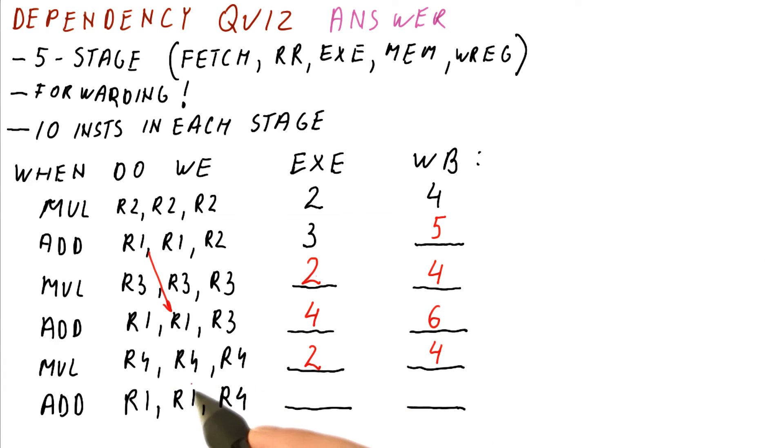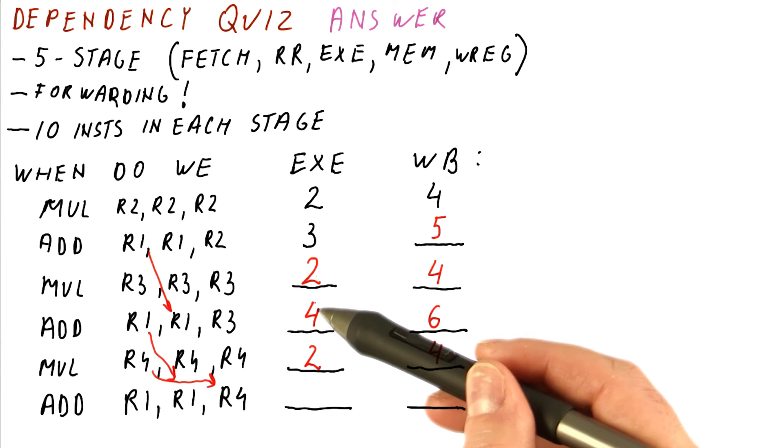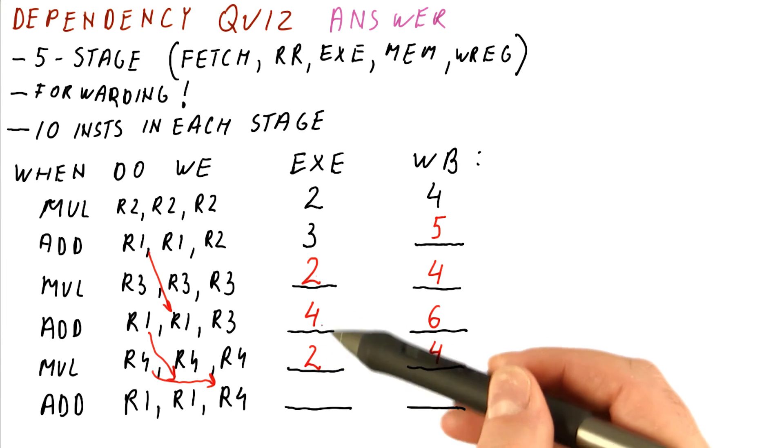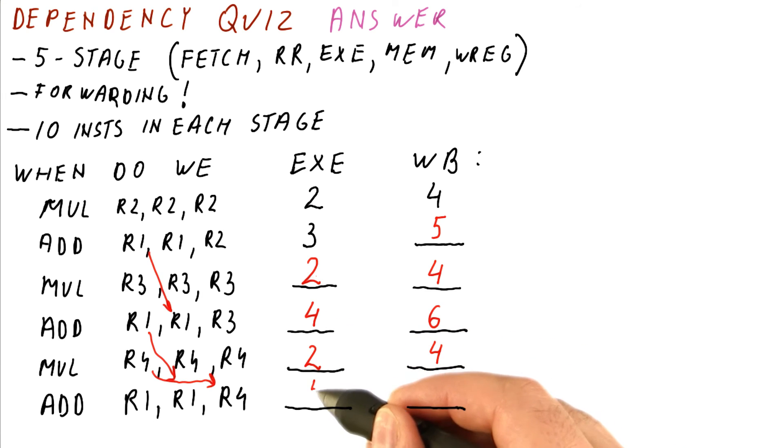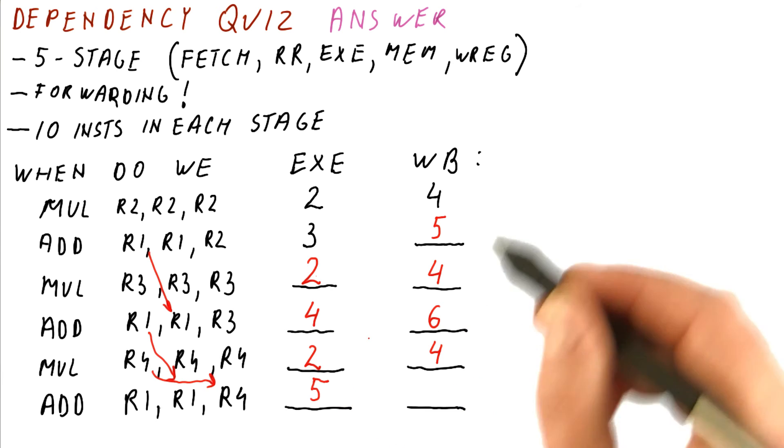And then finally, let's look at this add here. It's using R1 from here, it's using R4 from here. So our execution has to be in the cycle that follows the larger of these two. The larger is the cycle four, so we have to begin our execution in cycle five here. At the end of cycle five, we will have the result.